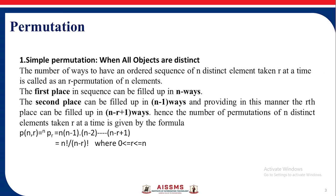Simple permutation: when all objects are distinct. The number of ways to have an ordered sequence of n distinct elements taken r at a time is called an r-permutation of n elements. The first place can be filled in n ways, the second in n minus 1 ways, and the rth place in n minus r plus 1 ways. So the formula is P(n, r) = n factorial upon (n minus r) factorial.